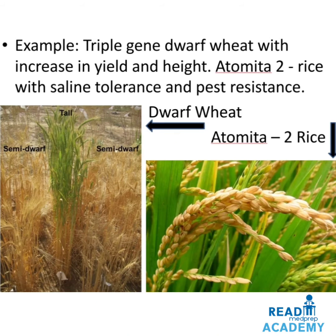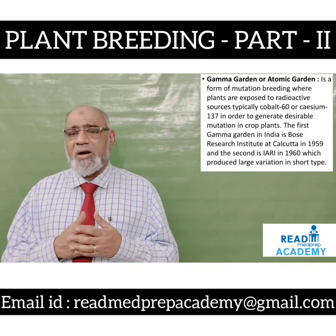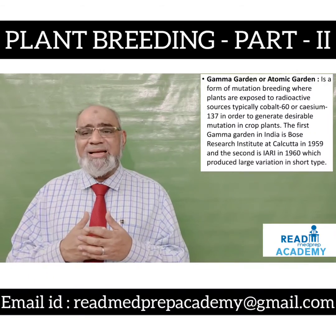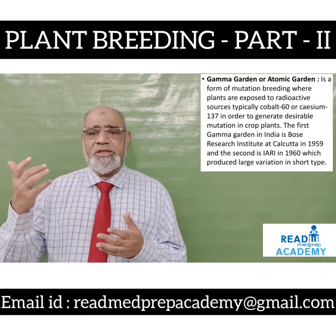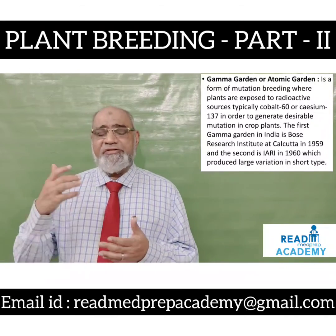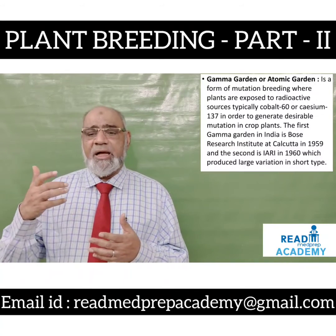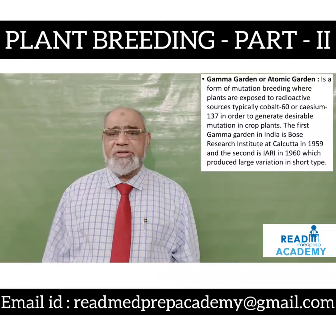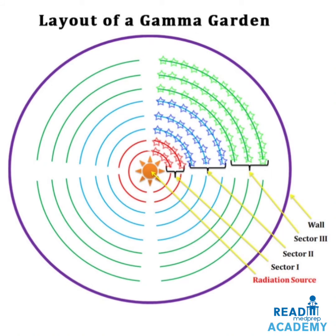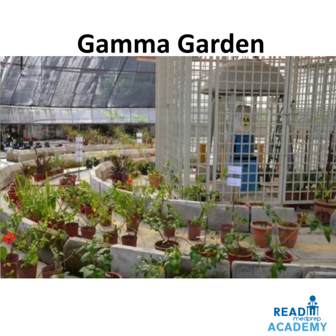What is a gamma garden or atomic garden? It is a form of mutation breeding where plants are exposed to radioactive sources, typically Cobalt-60 or Cesium-137, in order to generate desirable mutations in crop plants. The first gamma garden in India was at Bose Research Institute, Kolkata, in 1959, and the second at IARI (Indian Agricultural Research Institute) in 1960. The gamma garden layout has an outermost thick wall; inside is sector 3 which gets minimum radiation; inside that is sector 2 with moderate radiation; and the innermost is sector 1 with maximum radiation, with the radiation source at the center.